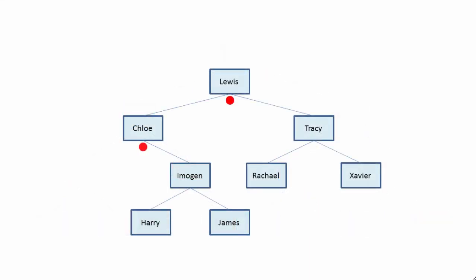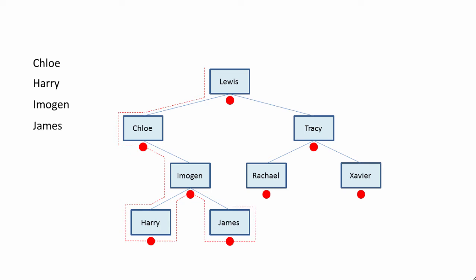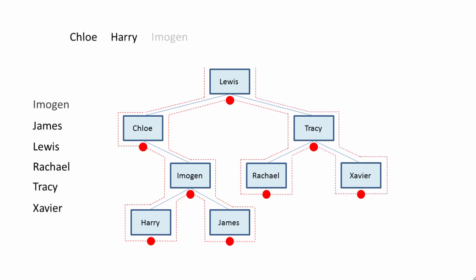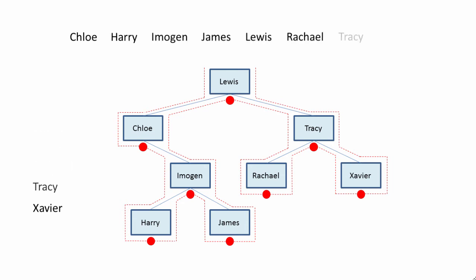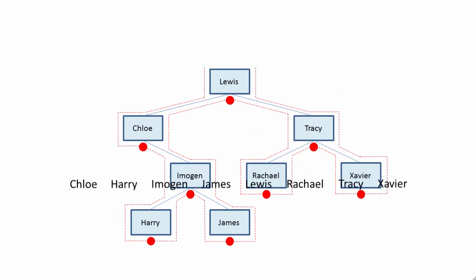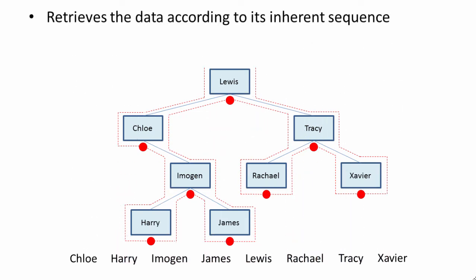Let's do it with some real data. We're putting a dot underneath each node and following the path indicated by these dots. The first data out is Chloe, then Harry, Imogen, James. Lewis is next, then Rachel, Tracy, and Xavier. Notice that it's in alphabetical order — in-order traversal retrieves the data according to its inherent sequence.